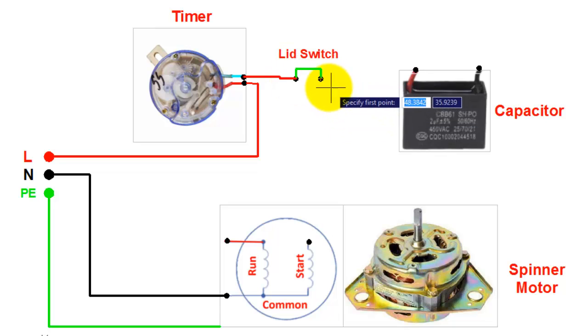Now, connect the other terminal of the switch with one end of the capacitor. You can also bypass this switch and connect the timer directly with one end of the capacitor.